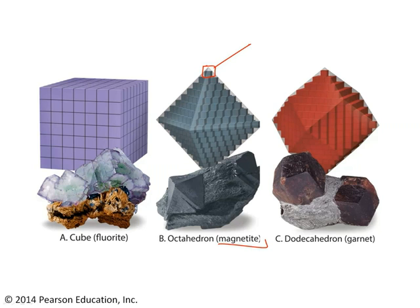When you put a bunch of those little unit cells together, you end up getting a nice octahedral shape, assuming that it's not hemmed in by any surrounding obstacles. Other examples here are the cubic shape of fluorite and the dodecahedron shape of garnet.